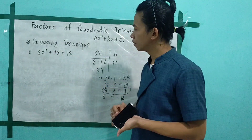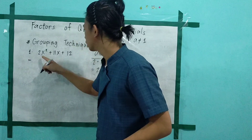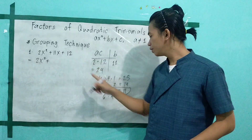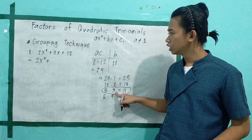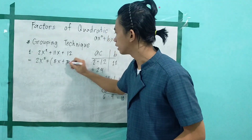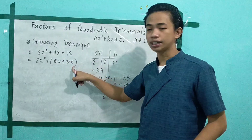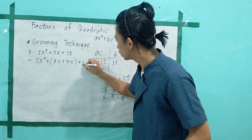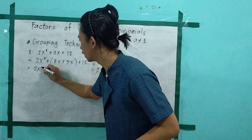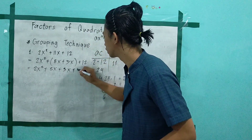Let's proceed. How do we factor using the grouping technique? We copy 2x squared, then instead of 11x, we use 8 and 3. So we write 8x plus 3x in parentheses, then plus 12. So we now have 2x squared plus 8x plus 3x plus 12.